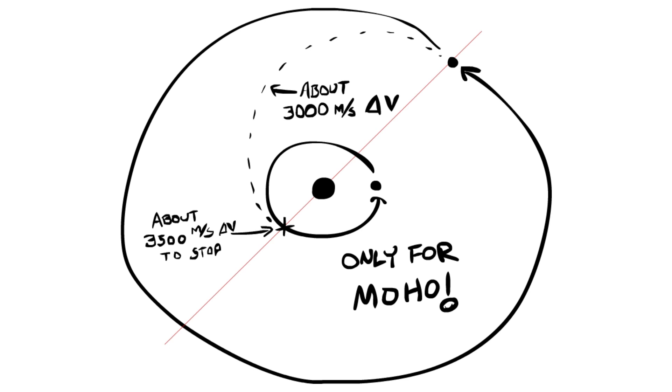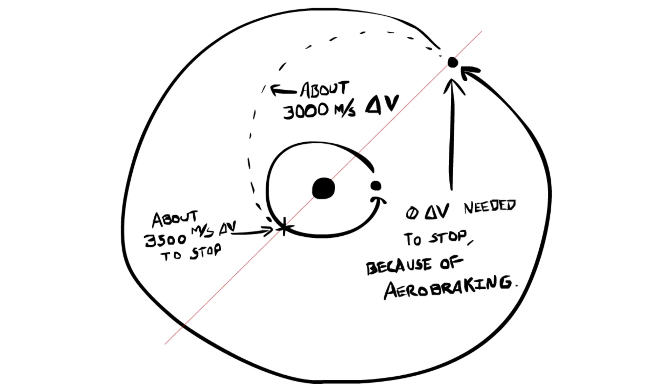Getting back takes the exact same amount of delta-v as it took to get to Moho. The only difference is we don't have to use our rockets to slow down around Kerbin, since Kerbin has an atmosphere and we can perform aerobraking to do that.